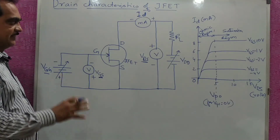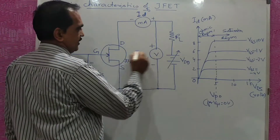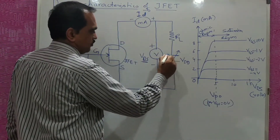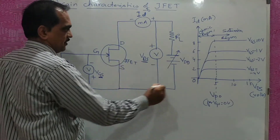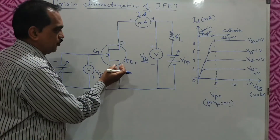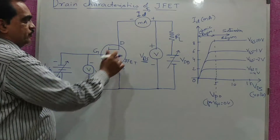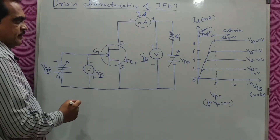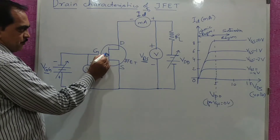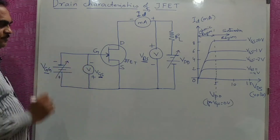The voltage is applied such that current flows from source to drain. The drain of the N-channel is connected to positive and the other end to negative, so the flow of electrons in the N-channel is from source to drain, measured as ID. The gate has been reverse biased because it is a P-type semiconductor connected to negative.